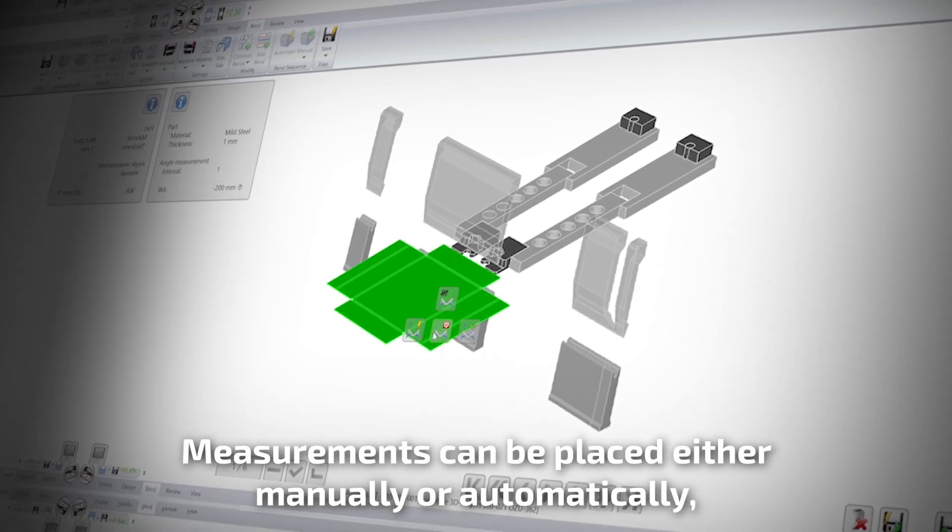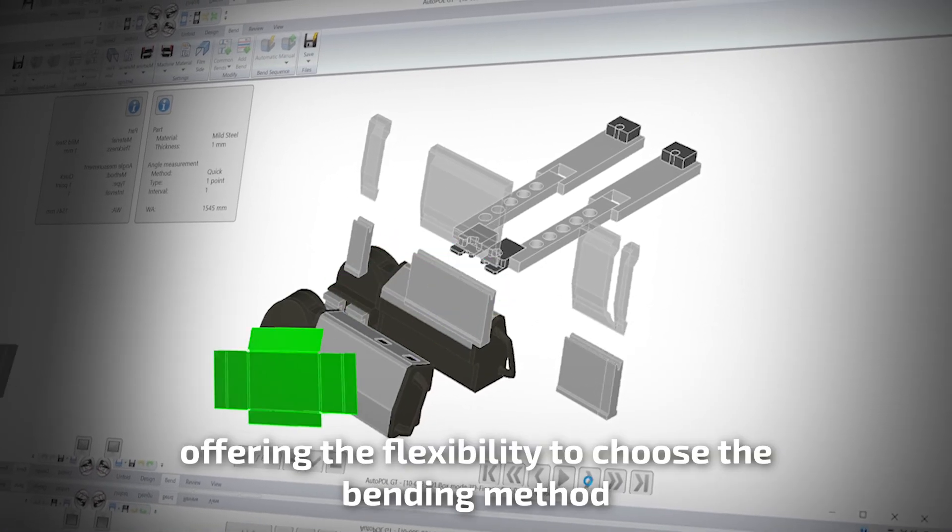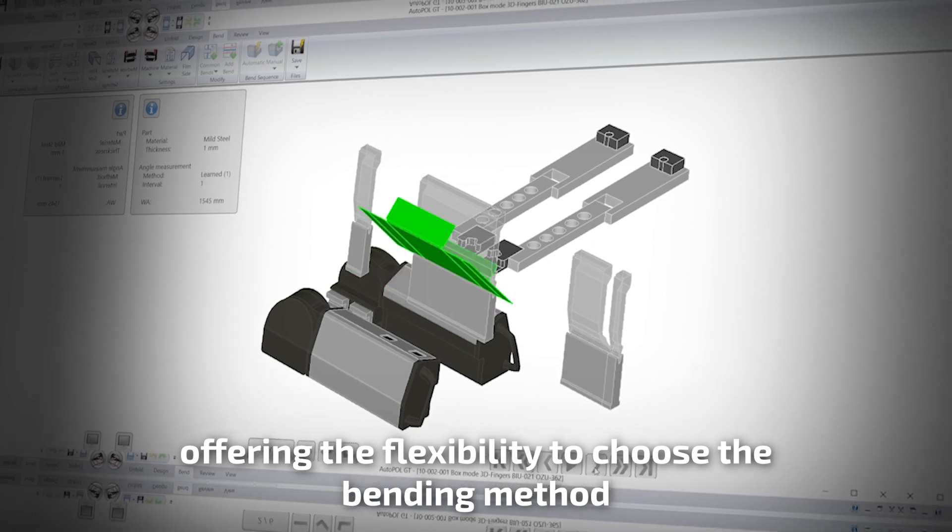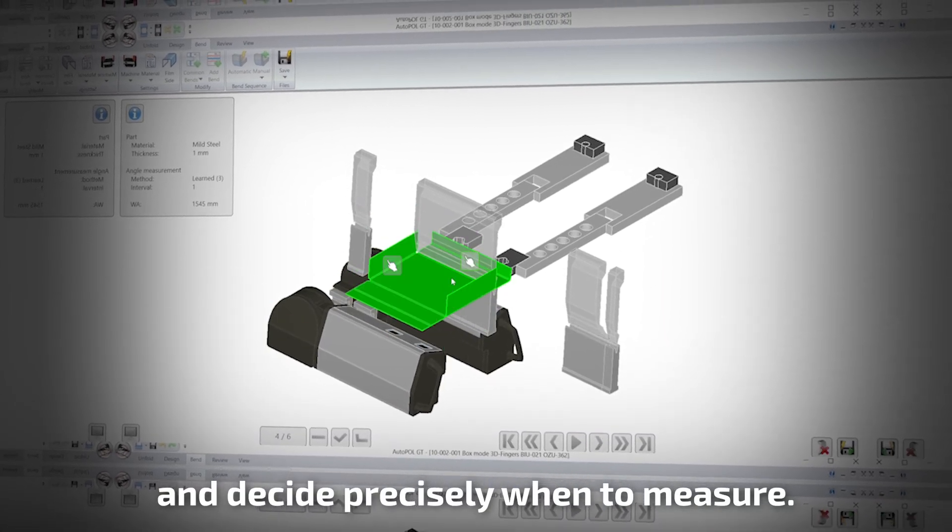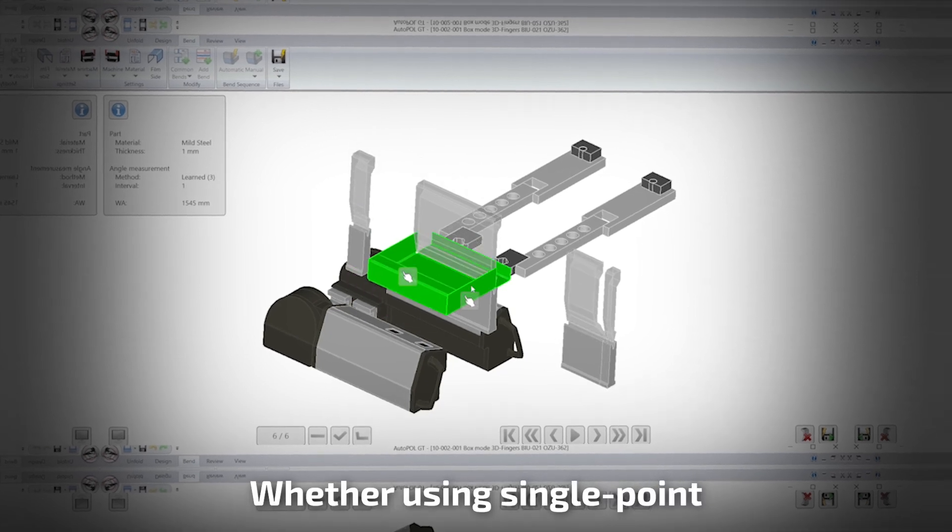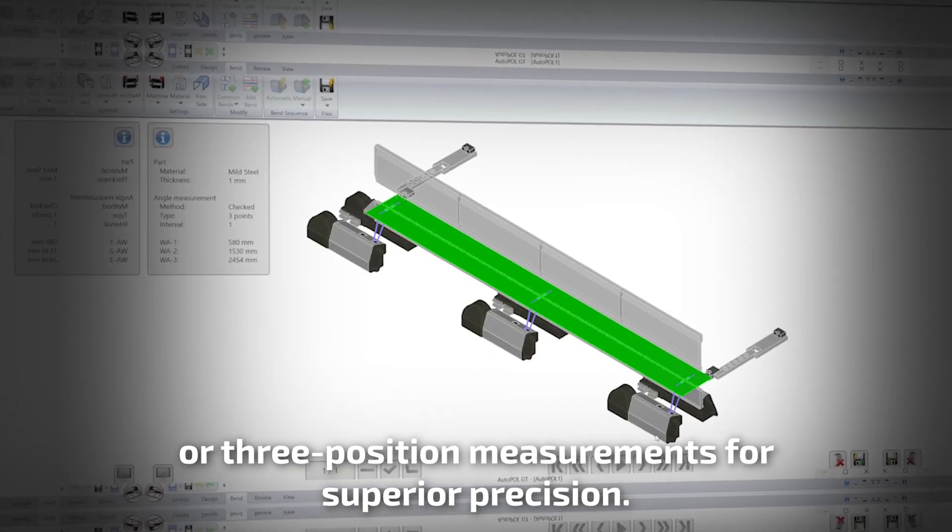Measurements can be placed either manually or automatically, offering the flexibility to choose the bending method for each individual bend and decide precisely when to measure, whether using single point or three position measurements for superior precision.